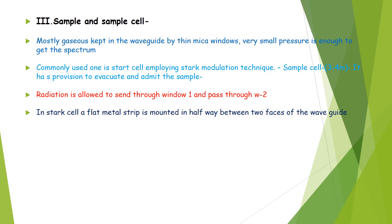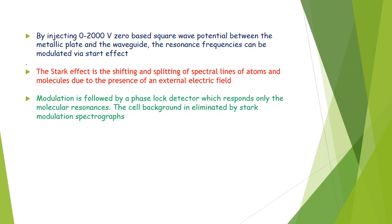There is a metal strip mounted halfway between two phases of the waveguide. By injecting 0 to 2000 volts, zero-based square wave potential, this is the external electric field given to the radiation, between the metallic plate and the waveguide. The resonant frequency can be modulated by Stark effect. We know the Stark effect is nothing but shifting and splitting of spectral lines of atoms and molecules due to the presence of the electrical field. So, the modulation is followed by a phase-lock detector which responds only the molecular resonances.